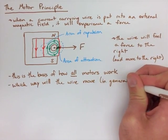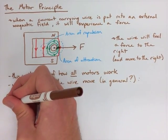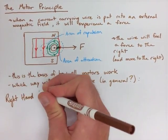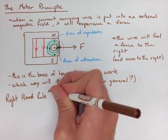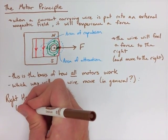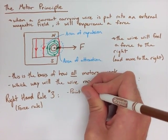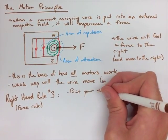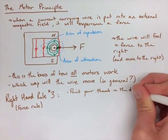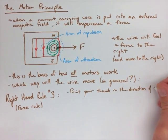So again what we're going to start with is pointing our thumb in the direction of the current. So it's kind of similar to the first right hand rule where we point our thumb in the direction of the current. The second thing though is we're going to straighten our hand out. So we have straightened fingers now.